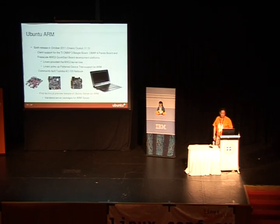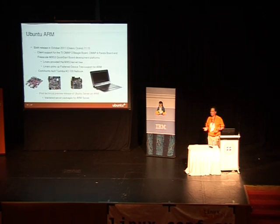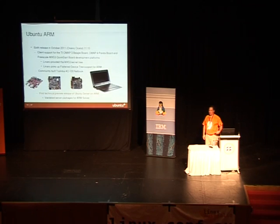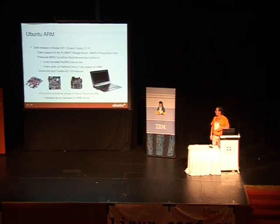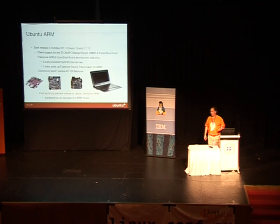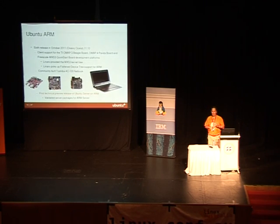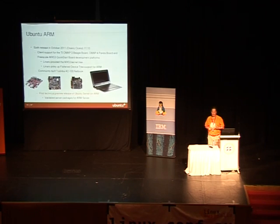The other thing we did, which I think is really important, was the first technical preview of Ubuntu's server. A lot of SOC vendors are now jumping into the server space, building quad-core or better, 1.5 to 2 GHz SOCs with SATA support to address a 32-bit server market. We went through the archive and all of what is normally a server package for Ubuntu x86, validated that it worked and actually ran — because on some ARM code in the archive, you can get it to compile but it won't always do what you think.